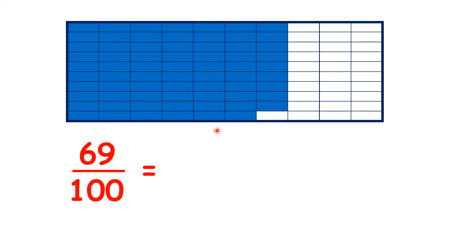But just as we can partition the number 69 into tens and units, we can partition 69 hundredths into tenths and hundredths.